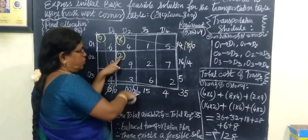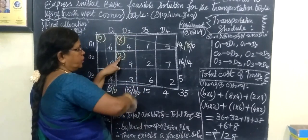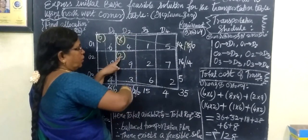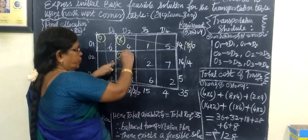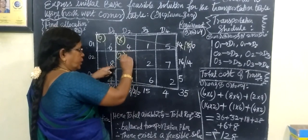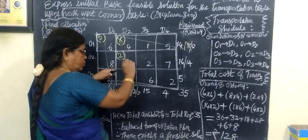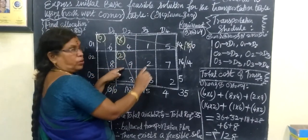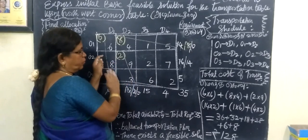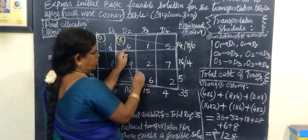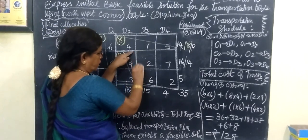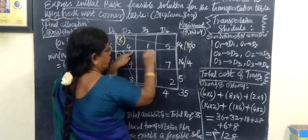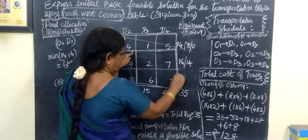Since it is 0, the corresponding column will be deleted. Strike out like this. Now you totally forget about this column. Here the reduced table remains.